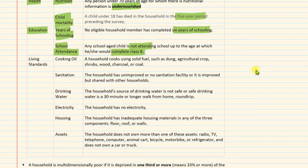For example, if a child should be in class six, class seven, or class eight according to their age, but they are not going to school — then that household will be termed as deprived on the dimension of education.